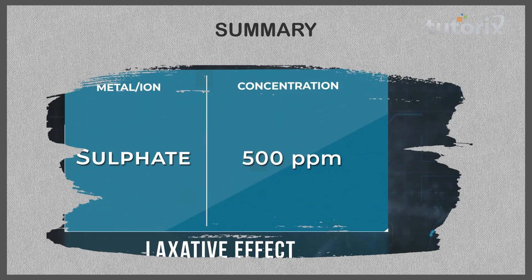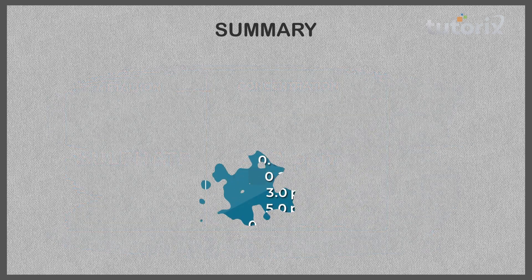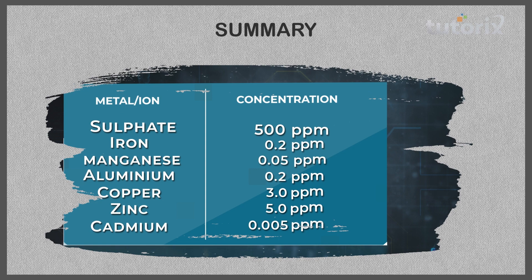The concentration of sulphate ions considered suitable is less than 500 ppm. The concentration of iron should be 0.2 ppm, manganese 0.05 ppm, aluminium 0.2 ppm, copper 3 ppm, zinc 5 ppm, and cadmium 0.05 ppm.